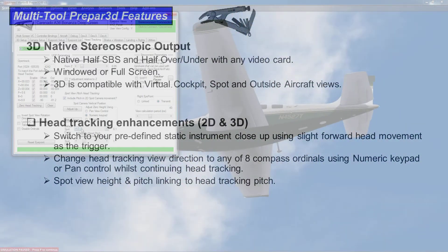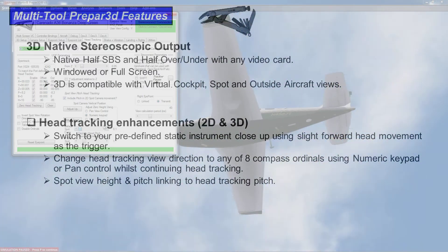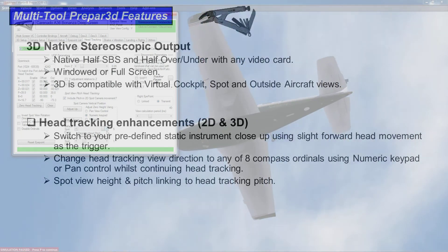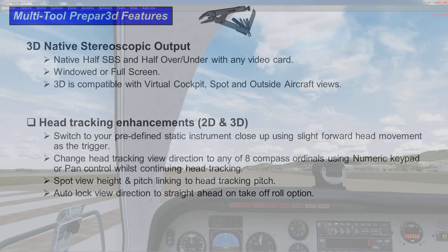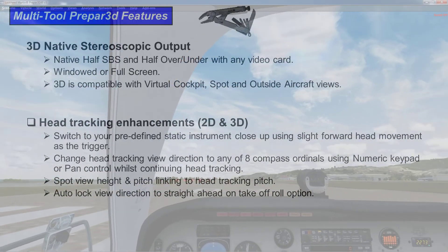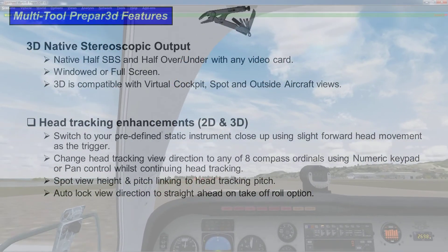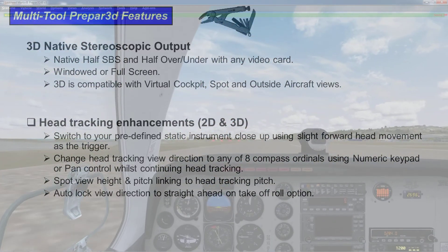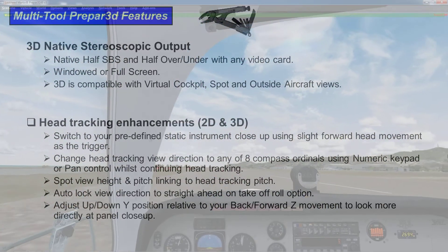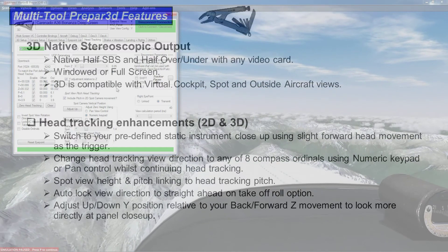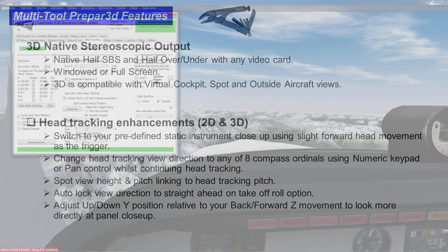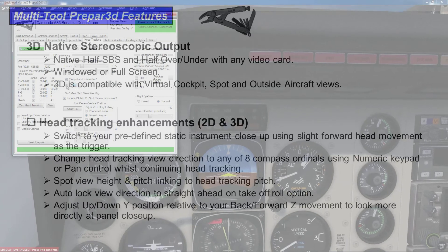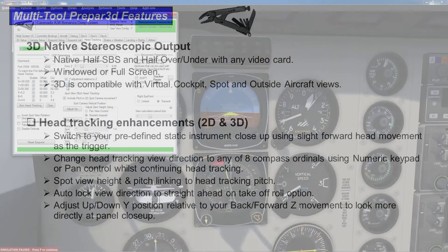Spot height in your spot views works with up and down head movement. There's the ability to auto-lock your heading as part of your head movement during the takeoff roll, just to make it easier to do your takeoff. And there's an adjustment for moving your Y axis up or down as your head moves closer or further away from the screen.